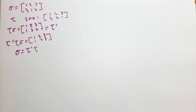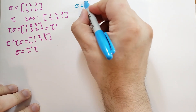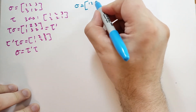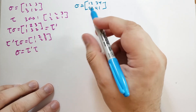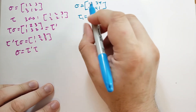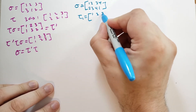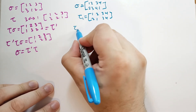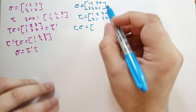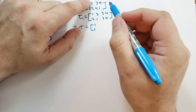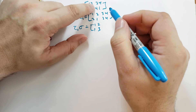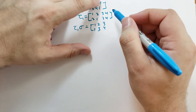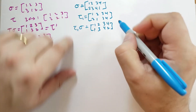Now let's do a more complicated example with 4 elements. Sigma equals (1,2,3,4) mapping to (2,3,4,1). We define tau_1 to switch elements 1 and 2: (1,2,3,4) goes to (2,1,3,4). Computing tau_1 sigma: 1 goes to 2 then 2 goes to 1, so 1 stays fixed; 2 goes to 3 then 3 stays 3, so 2 goes to 3; 3 goes to 4 then 4 stays 4, so 3 goes to 4; 4 goes to 1 then 1 goes to 2, so 4 goes to 2. So tau_1 sigma is (1,2,3,4) mapping to (1,3,4,2).